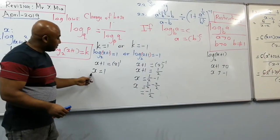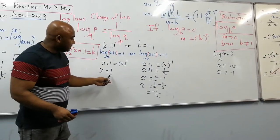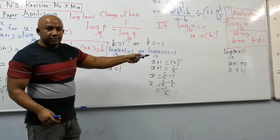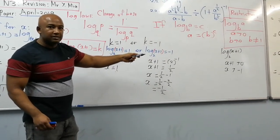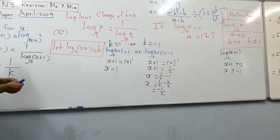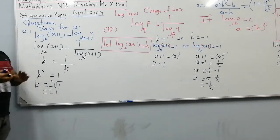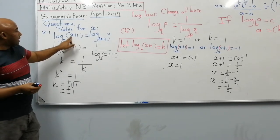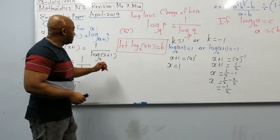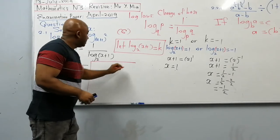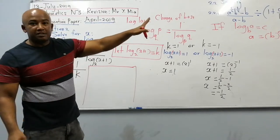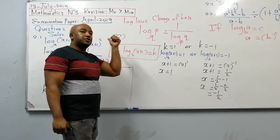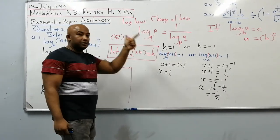Checking x equals 1: 1 is greater than minus 1, so it satisfies the restriction. Substituting back, I get log of 2 to the base 2 on the left, and log 2 to the base 2 on the right. Log 2 to the base 2 equals 1, so the left hand side equals 1 and the right hand side equals 1. Therefore x equals 1 satisfies the equation.